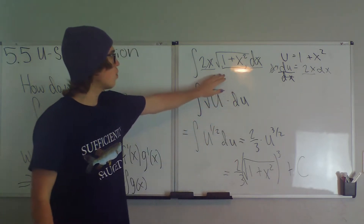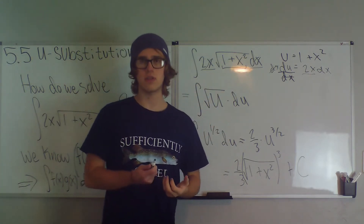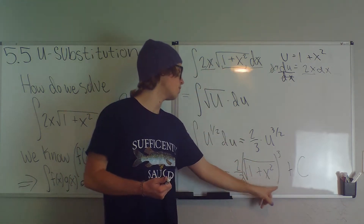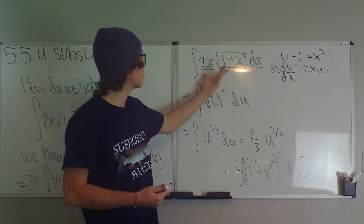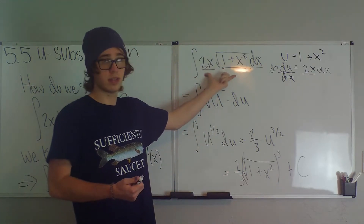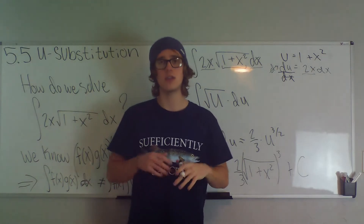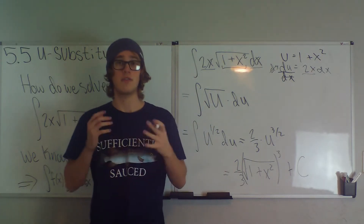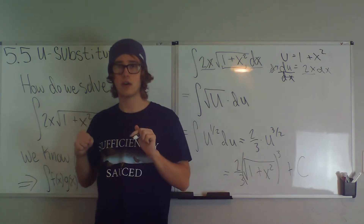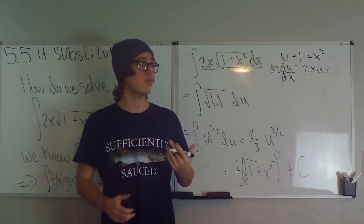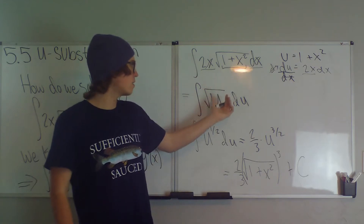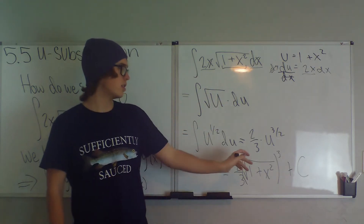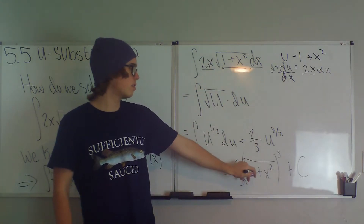So this is what we call u-substitution. We take whatever is inside a certain function — because if we were to differentiate this, we'd have to use chain rule and it would equal 2x times the square root of 1 plus x squared. U-substitution is basically taking a very complex function, pulling it out of our integral, replacing it with u, and it usually ends up as a very simple function we know how to integrate. Then we just substitute it back in.